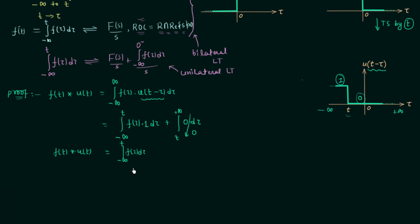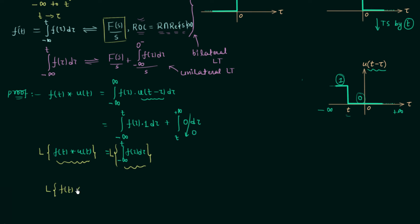We need the Laplace transform of the integral from minus infinity to t of f(tau) d(tau), which equals f(t) convolved with u(t). Using the convolution in time property of the Laplace transform, the Laplace transforms of the two signals get multiplied. So the Laplace transform of f(t) convolved with u(t) equals F(s) times the Laplace transform of u(t).